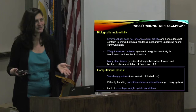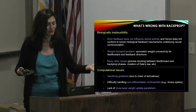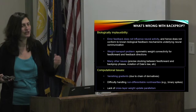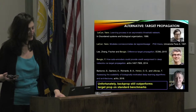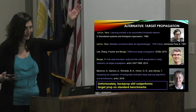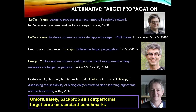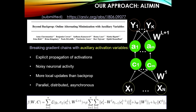Additionally, backpropagation cannot handle non-differentiable nonlinearities, and computationally, it cannot parallelize across layers — it is inherently sequential. Alternatives like target propagation have been tried before, but there is still room for improvement. We are adding our contribution with auxiliary variable methods: optimization based on explicit weight and activation updates, where activations are introduced as explicit noisy variables and you alternately minimize the objective function, easily incorporating sparsity constraints.